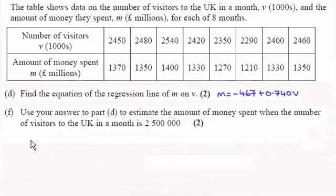Hi, now for part F we're asked to use the answer to part D, that's this one up here, to estimate the amount of money spent when the number of visitors to the UK in a month is 2,500,000.